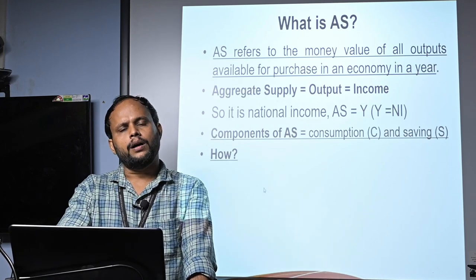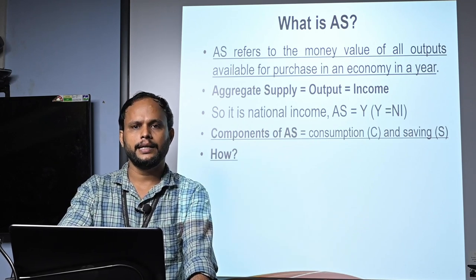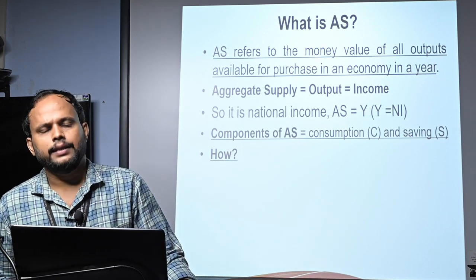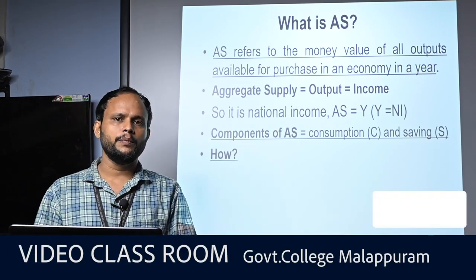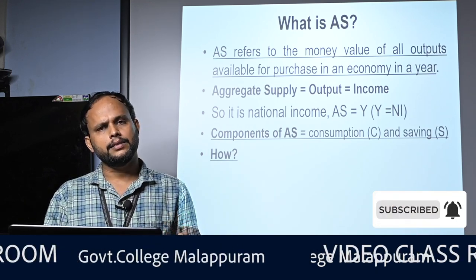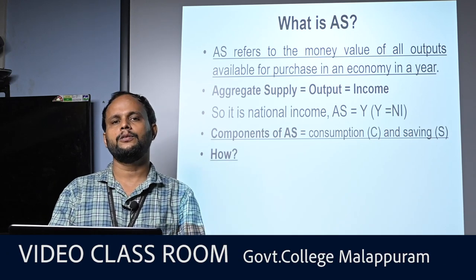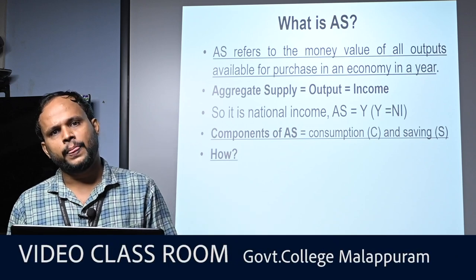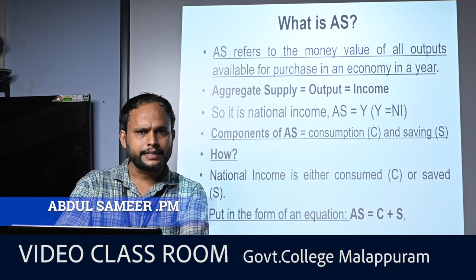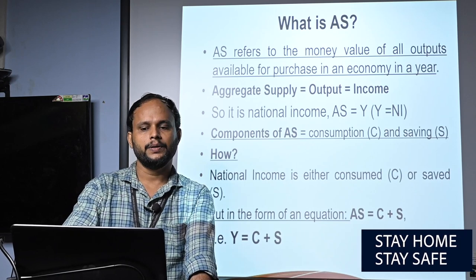Consumption and savings together equal aggregate supply, or national income, because all income earned in an economy — or earned by a person — will either be consumed or part will be saved. So the income of a person or an economy is the summation of consumption plus savings: Y = C + S.